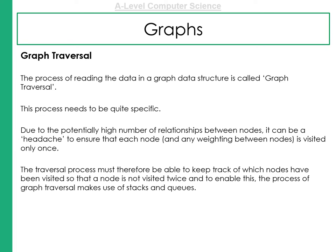Just like when we were dealing with a tree, we have a traversal. Graph traversal is the process of reading a graph data structure. This process actually has to be quite specific. There could be a high number of relationships between nodes. And it can actually be a headache to ensure that each node and the weight are visited only once.